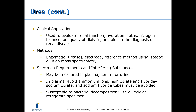Clinically, urea is used to evaluate renal function, hydration status, nitrogen balance, adequacy of dialysis, and it aids in the diagnosis of renal disease. Methods to evaluate urea in the blood include enzymatic methods using the urease enzyme, an electrode, and a reference method using isotope dilution mass spectrometry. It may be measured in plasma, serum, or urine. In plasma, ammonium ions must be avoided, so sodium citrate and sodium fluoride tubes should not be used. It is susceptible to bacterial decomposition, so specimens should be used quickly or refrigerated.